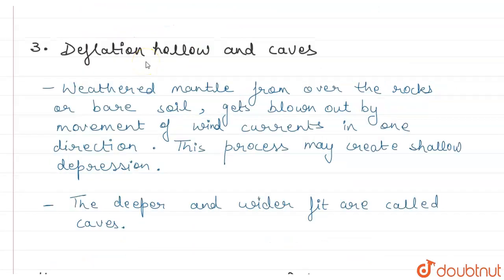Third, the landform is deflation hollow and caves. When weathered material on rocks or bare soil blows up with wind currents and movements, erosion starts. Where material blows away, a shallow depression forms called deflation hollow or blowout. When the blowout is deep and wide, we call it deflation hollows and caves.